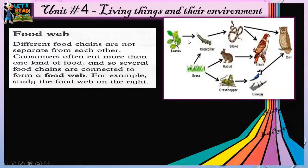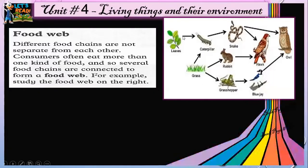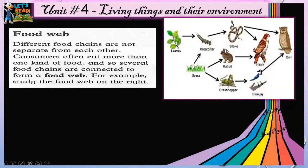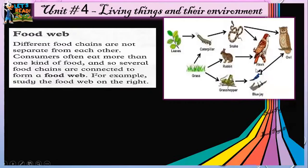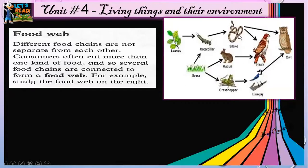The food web starts from green plants like leaves — leaves are eaten by a caterpillar. Grass is also eaten by a rabbit. Grass is also eaten by a grasshopper. The grasshopper is eaten by a blue jay. The blue jay is eaten by an owl. The rabbit is eaten by a hawk. The caterpillar is eaten by a snake. The snake is eaten by a hawk or owl.